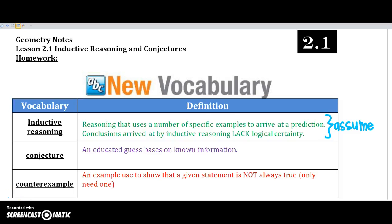Chapter 2 starts out with inductive reasoning and conjectures, and chapter 2 is based around reasoning and proof. So we're going to start with inductive reasoning. Inductive reasoning is reasoning that uses a number of specific examples to arrive at a prediction.